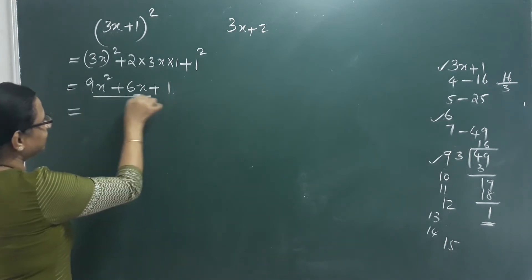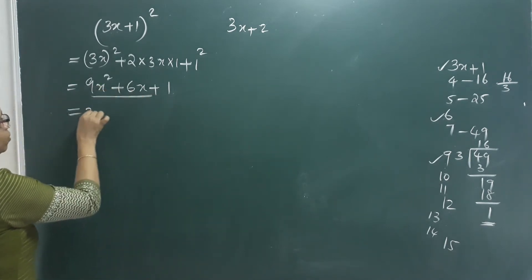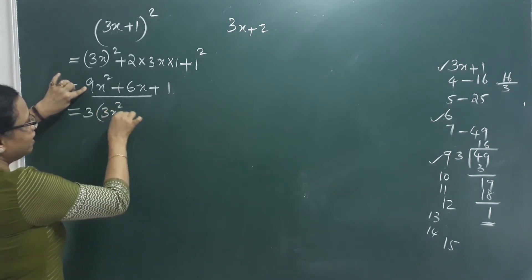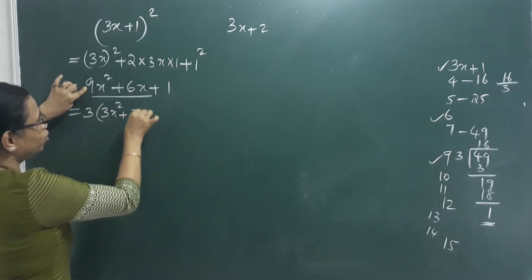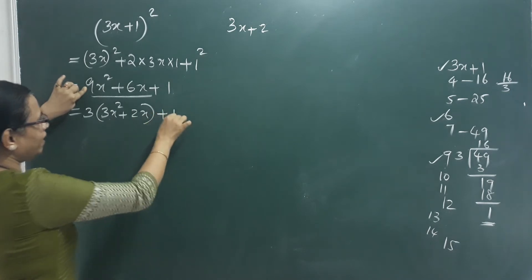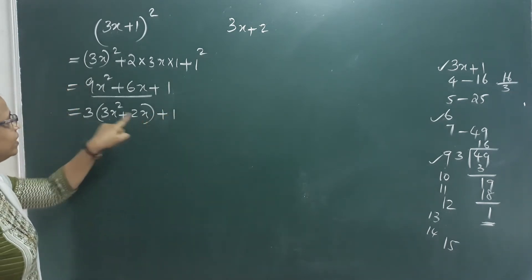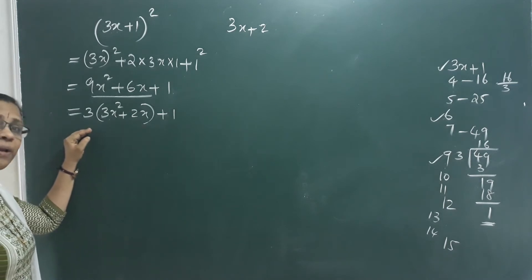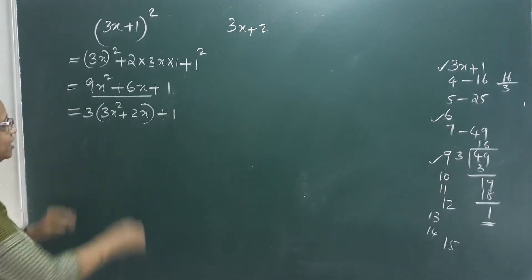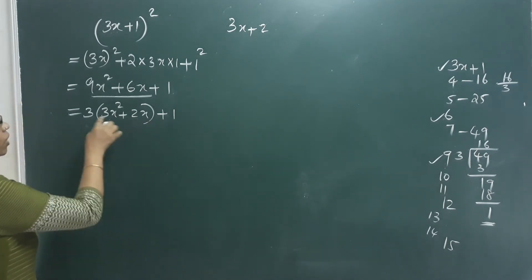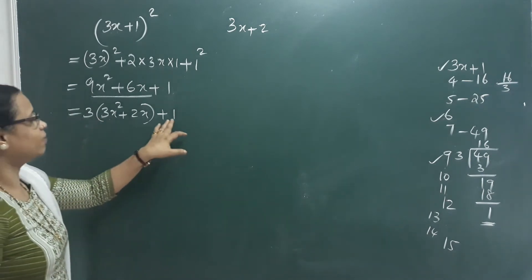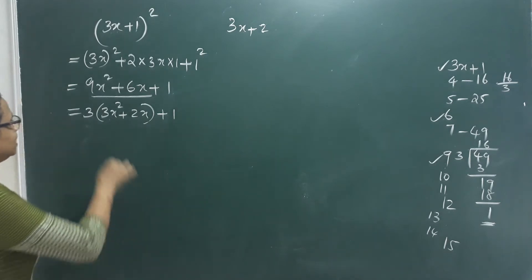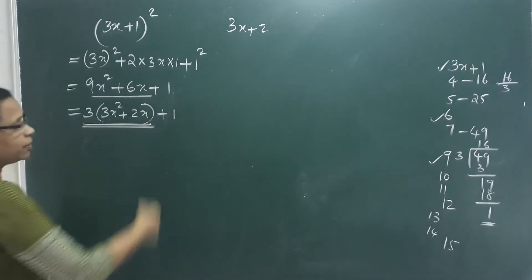Now this square is 3 outside. The square (3x+1)² gives 9x square plus 6x plus 1. Looking at 9x square plus 6x, that is 3 multiplied by something — so 3 divides that part completely. What remains is 1. So remainder is 1.